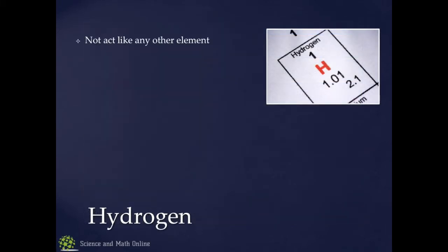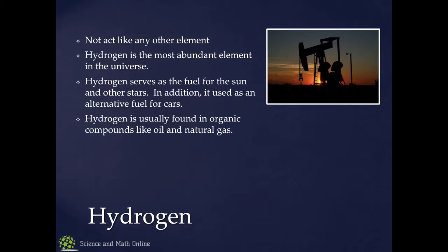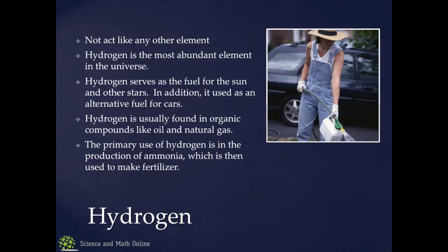Hydrogen doesn't act like any other element, but it's abundant in the universe and it's a fuel for the sun and other stars. It's also used in hydrogen fuel cells in cars. We use it in organic compounds — oil and natural gas have a lot of hydrogen in them. Our primary use today is the making of ammonia: you take nitrogen and hydrogen, react them with a catalyst, and you get ammonia, which we use for fertilizer.